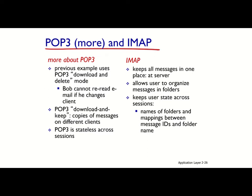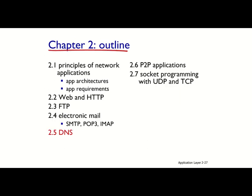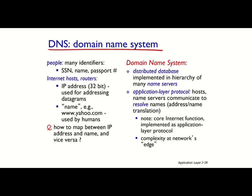Next we briefly introduce DNS — Domain Name System. DNS is a distributed database implemented in a hierarchical fashion. It helps application layer protocols by translating host names to their corresponding IP addresses. For example, a host name like google.com will be translated to its permanent IP address using the distributed databases that DNS has all over the world.